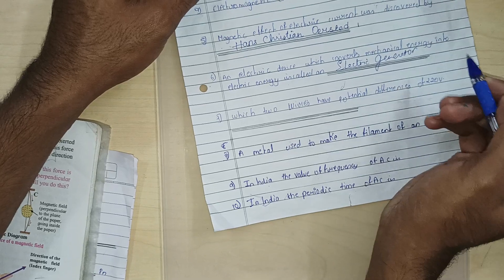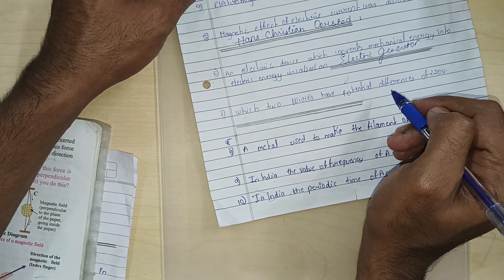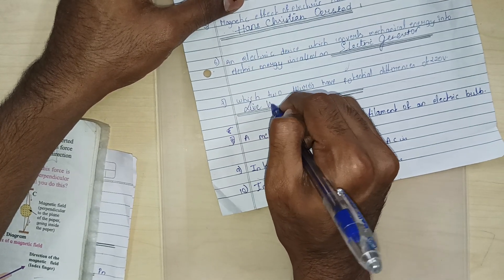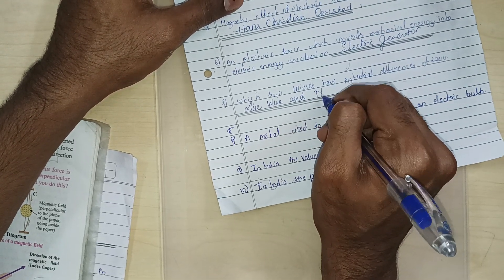Which two wires have potential difference of 220 volt? Between 220 volt, who has the difference? Exactly, I have taught you the paragraph also. Live wire and neutral wire. Live wire and neutral wire.